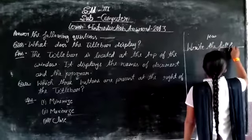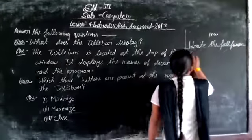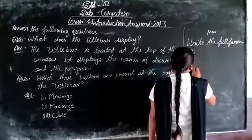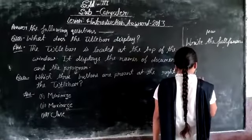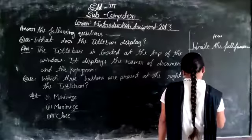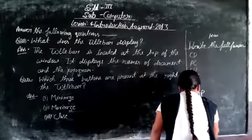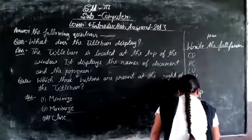Write the full form. CD, PC, CU, MU, CRT, DNP, ALU, and UPS.